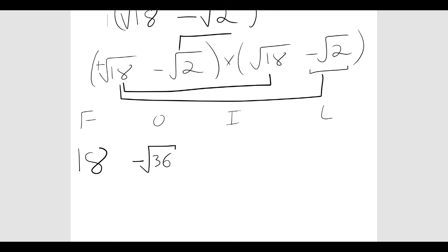Inside, minus root 2 times root 18, which is minus root 36. Last, minus root 2 times minus root 2 is just plus root 2 times root 2, which is 2.